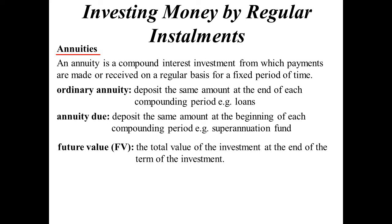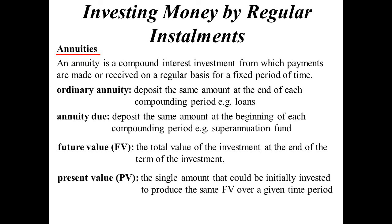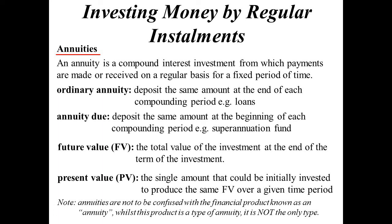Future value is the total value of the investment at the end of the total investment period. Whereas present value is how much you would have to invest now to get that same value without having to make any more payments over the same timeframe. Just to make it confusing, there is a bank product known as an annuity — it is a type of annuity, but it's not the only type.